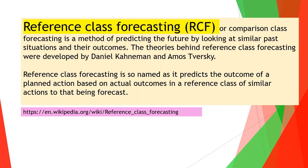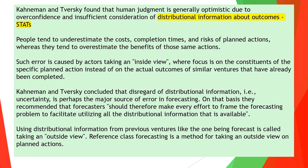Kahneman and Tversky found that all of us — not just you, but me — we're optimistic due to overconfidence and we just don't know the distributional information about outcomes. What that means is stats. We are not aware of the stats, the probabilities, the percentages. How long does it take to build a tree house if you're a kid? It's important to know it takes 10 months. A kid needs to know that versus getting mad after a day. Help your kids with reference class forecasting too.